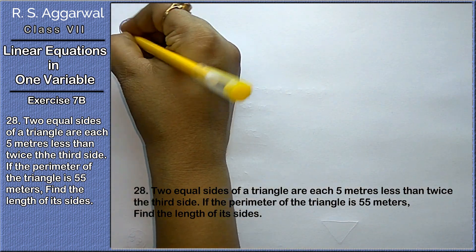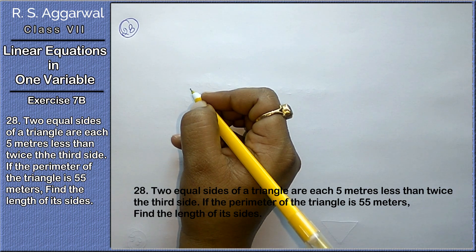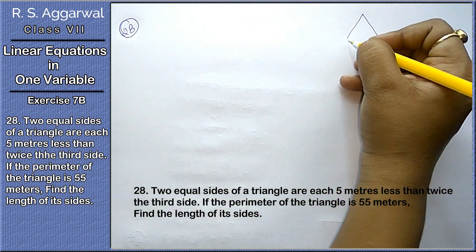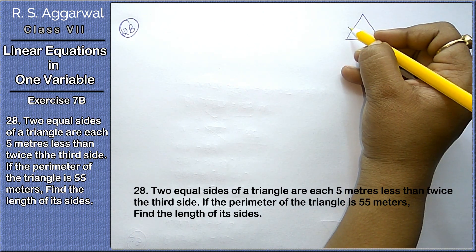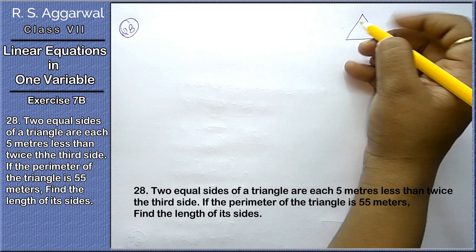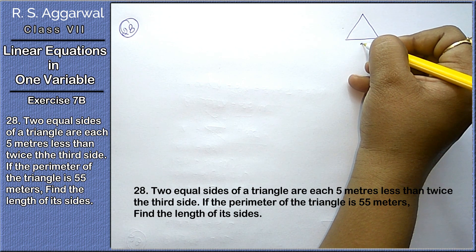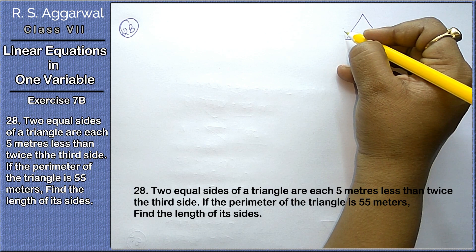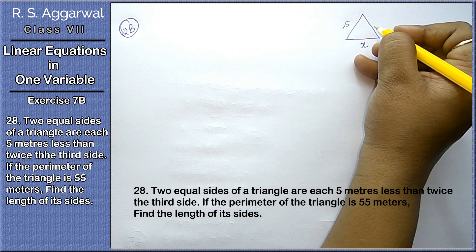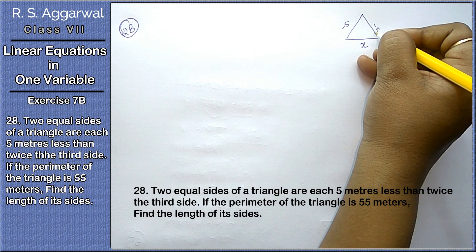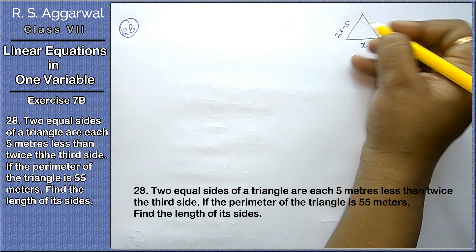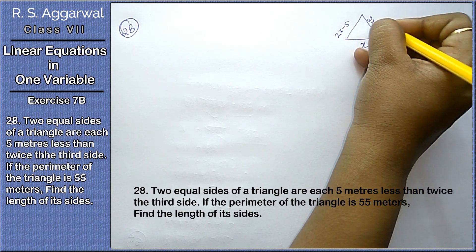Let's do 28th question. Two sides of a triangle are each 5 meters less than twice the third side. Let the third side be x, that means 5 meters less than twice the third side. Third side is x, then twice is 2x.